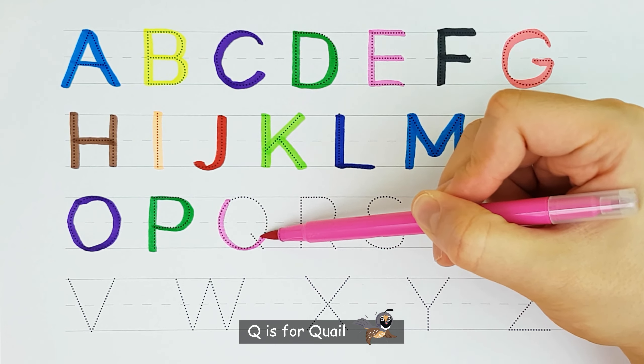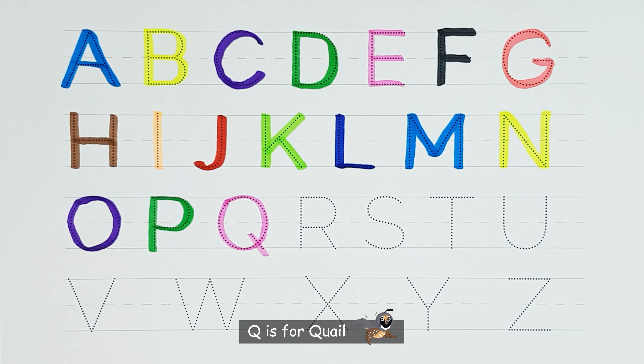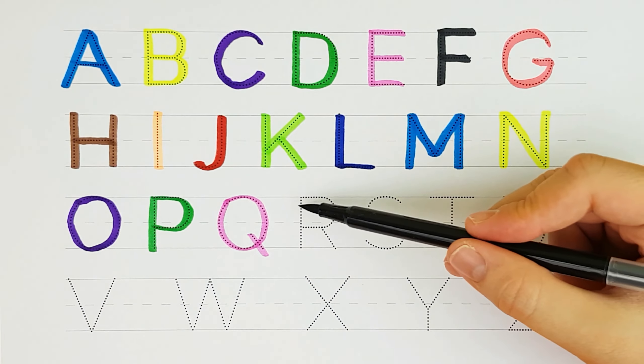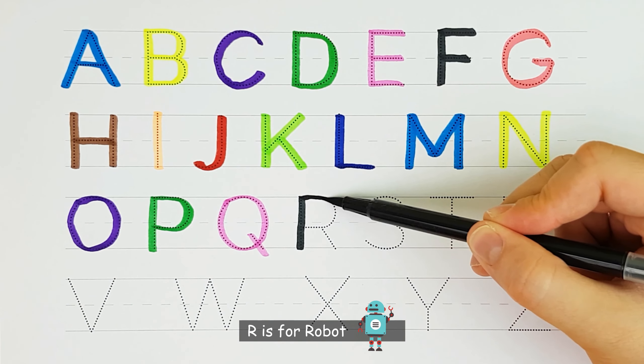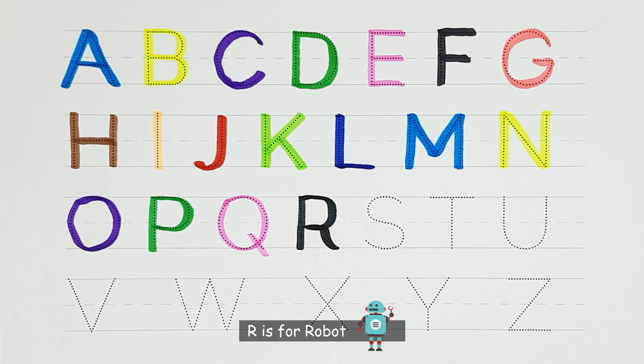Q. Q is for quail. Q. R. R is for robot. R.